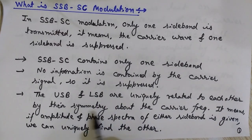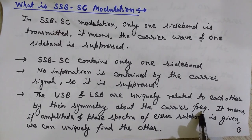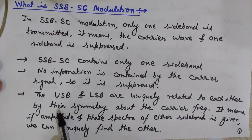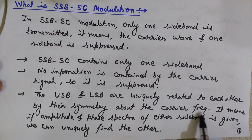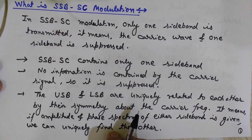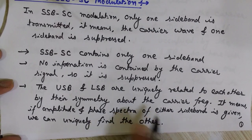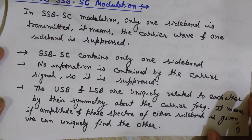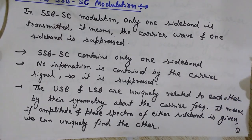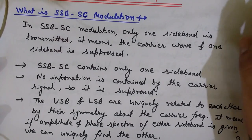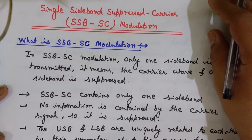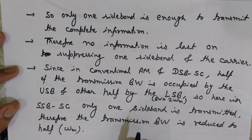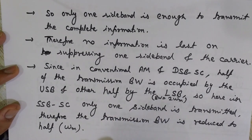USB and LSB are uniquely related by their symmetry about the carrier frequency. This is why it is sufficient to transmit only one sideband — if the amplitude and phase spectra of either sideband is given, we can uniquely find the other. So we can save power by transmitting only one sideband. This is the basic concept of single sideband suppressed carrier.